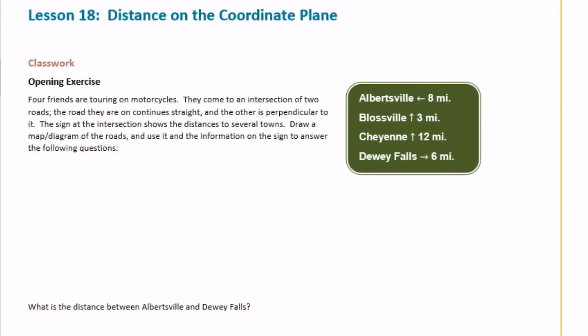6th grade module 3, lesson 18 classwork, opening exercise. Four friends are touring on motorcycles. They come to an intersection of two roads. The road they are on continues straight, and the other is perpendicular to it. The sign at the intersection shows the distances to several towns. Draw a map diagram of the roads and use it and the information on the sign to answer the following questions.